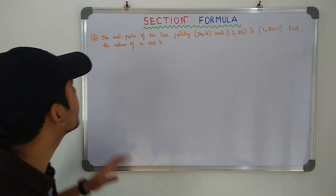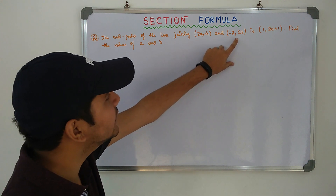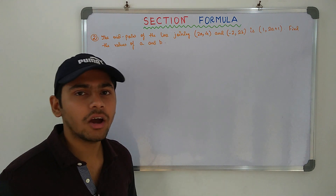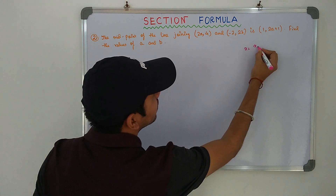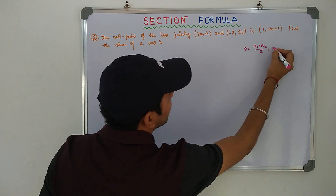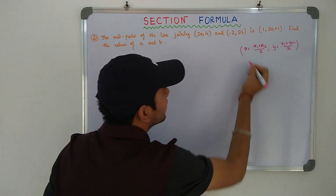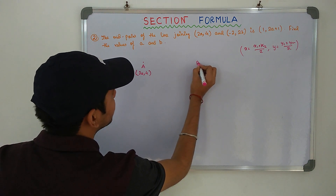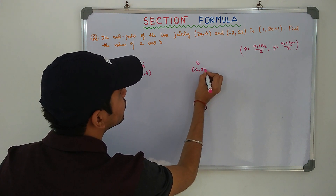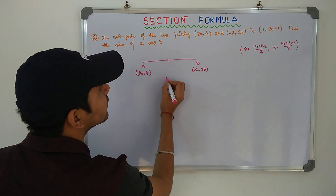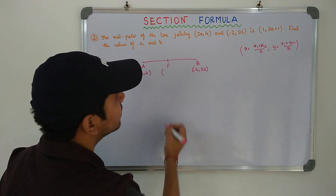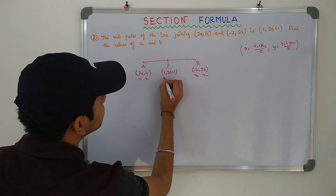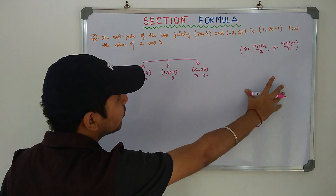Moving on to the next sum: the midpoint of the line joining A(2A, 4) and B(-2, 2B) is (1, 2A plus 1). You have to find the values of A and B. This is a very easy question from Midpoint Formula. The Midpoint Formula is: x equals x1 plus x2 by 2, and y equals y1 plus y2 by 2. Let me construct the line A(2A, 4) and B(-2, 2B). The midpoint P has coordinates (1, 2A plus 1). We'll simply put everything in the formula and get the answer.